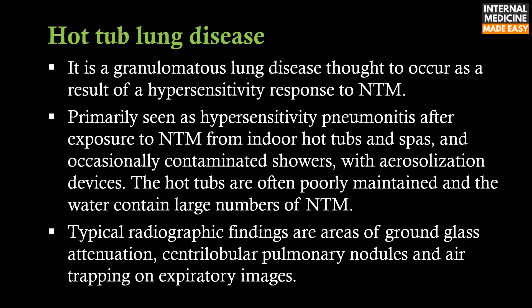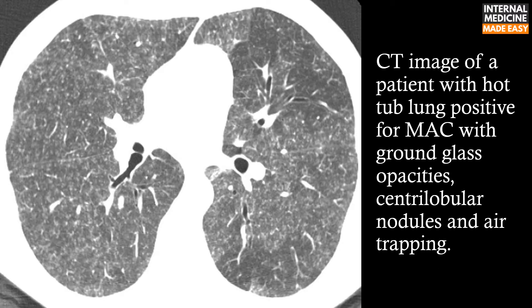Typical radiographic findings are areas of ground glass attenuation, centrilobular pulmonary nodules, and air trapping on expiratory images. This is the CT image of a patient with hot tub lung, positive for MAC, with ground glass opacities, centrilobular nodules, and air trapping.